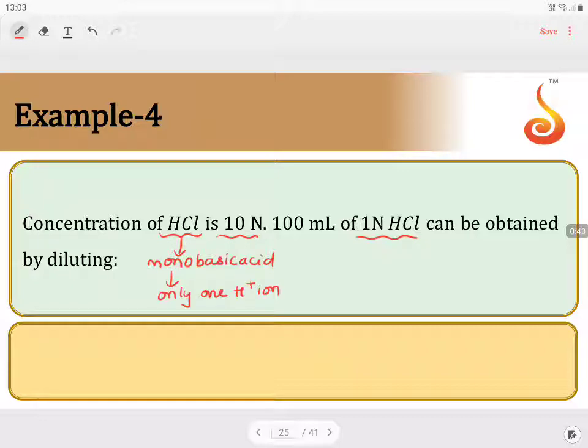What is special about monobasic acid is molarity of monobasic acid equals normality. So the molarity of HCl is 10 molar.